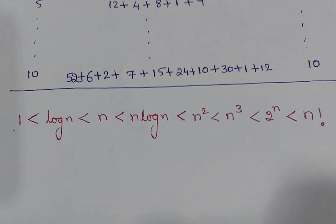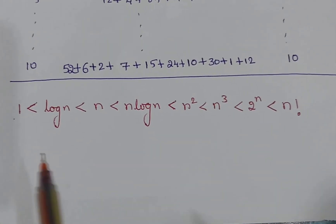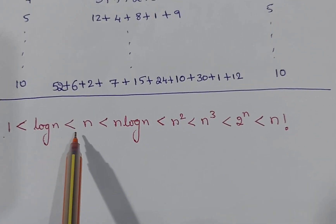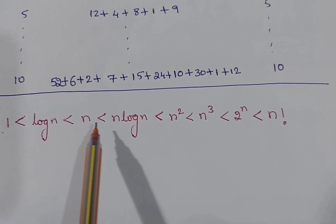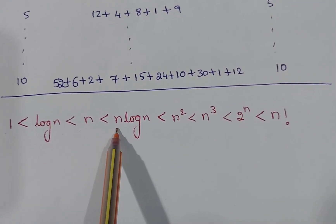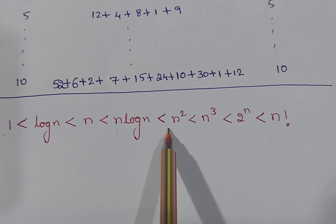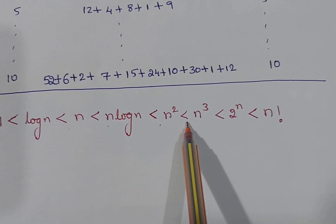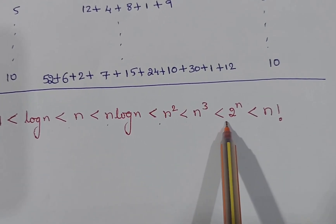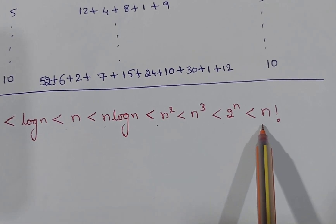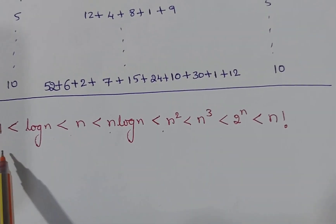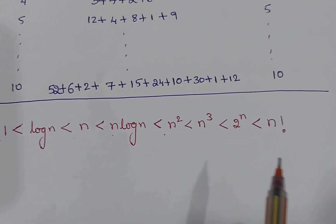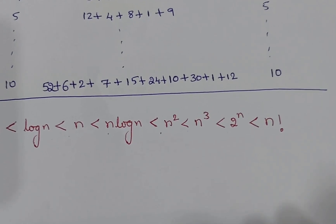From that we can write this equation: 1 is always less than log n, which is less than n, which is less than n log n, which is less than n², which is less than n³, which is less than 2 to the power of n, which is less than n factorial. This is our order of growth. Hope you all understood. Thank you.